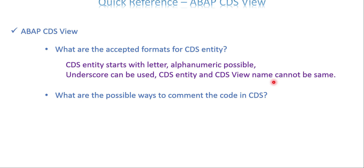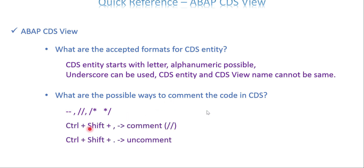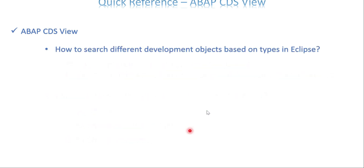What are the accepted formats for a CDS entity? The CDS entity name starts with a letter, can be alphanumeric, and underscore can be used. Can CDS entity and CDS view names be identical? The answer is no. What are the possible ways to comment code? There are three options: double dash (--), double slash (//), or a block comment using slash-star (/* ... */). The shortcut for double slash is Ctrl+Shift+Comma, and Ctrl+Shift+Dot to uncomment.